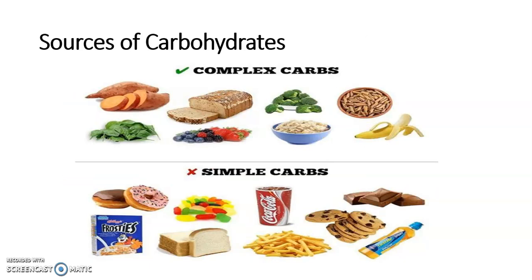If we talk about the sources of carbohydrates, we have an example for each one. For complex carbs, we have foods like potato or sweet potato, green vegetables like broccoli, certain fruits like banana and berries, and whole grain bread or brown pasta. For simple carbs, common types include sweet foods like donuts, chocolate, soda, certain syrups, fries, and white bread.